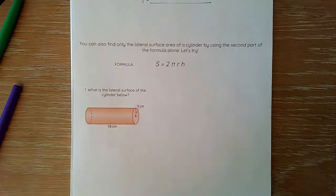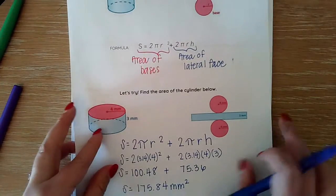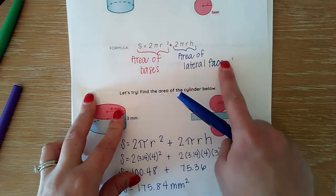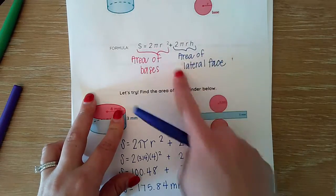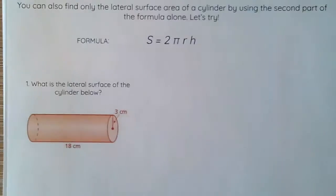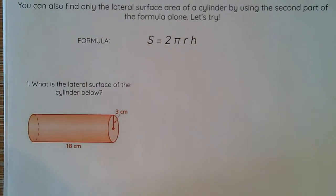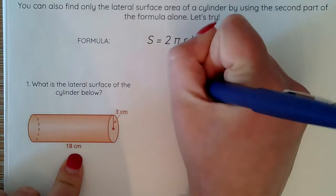So sometimes you might be asked to find only that. In that case, like we said on the first side, we just need to use our second half of our surface area formula. We only find the lateral face, that rectangular side. So we use this formula, and let's go ahead and find this lateral surface area of our cylinder here.